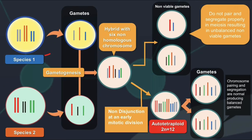For example, species one and species two each contribute n gametes, forming a hybrid with six non-homologous chromosomes. This hybrid is theoretically 2n but practically haploid because each parent contributes its own n chromosomes. Very rarely, non-disjunction occurs during mitotic division, leading to doubling of chromosomes and making the hybrid tetraploid.